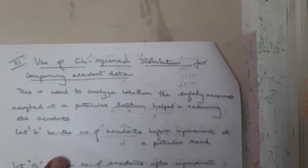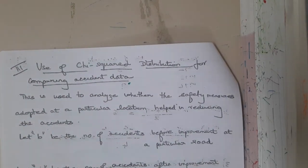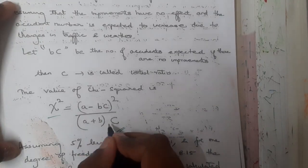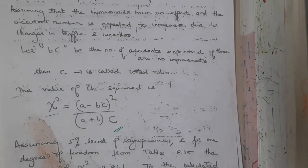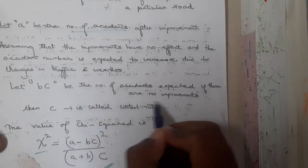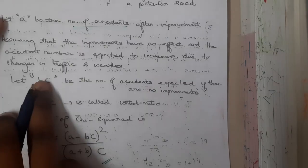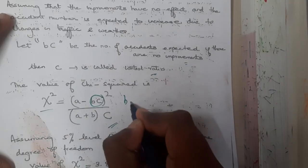Let us continue with the next method: use of chi-square distribution for comparison of accident data. The formula is: χ² = (A − BC)² / (A + B) × C, where A is the number of accidents observed, BC is the expected number of accidents if there are no improvements, and C is called the control ratio. Note: BC is a single term, not B multiplied by C.